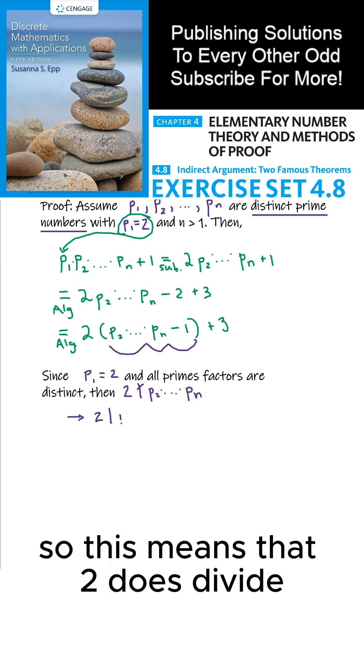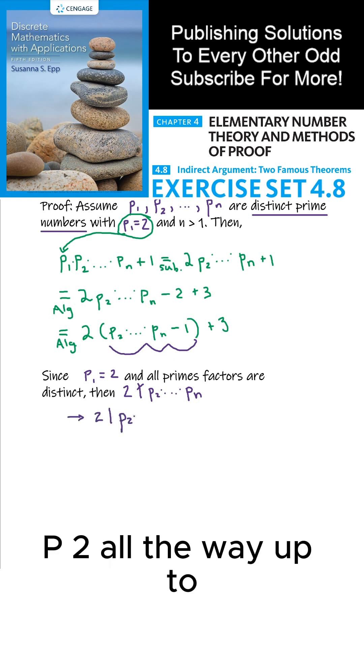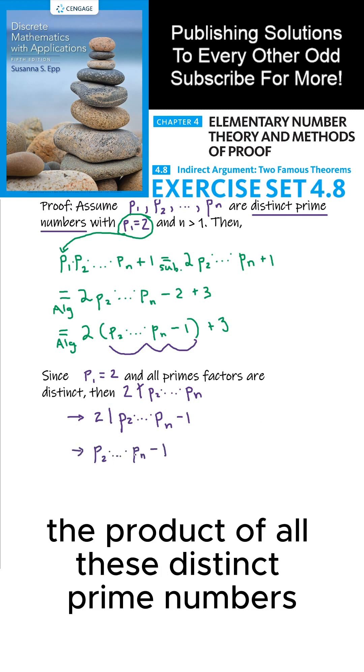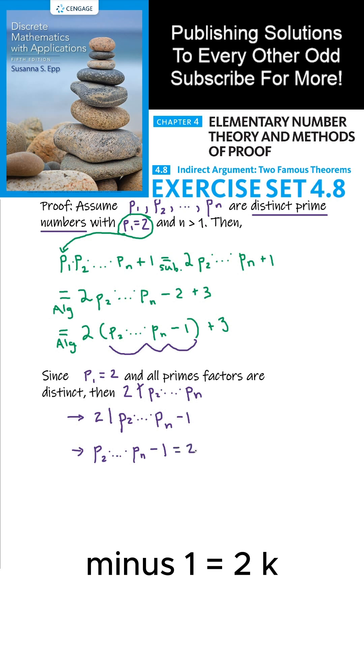So this means that 2 does divide p₂ all the way up to pₙ minus 1, since subtracting 1 from any odd number is even. That means that the product of all these distinct prime numbers minus 1 equals 2k for some integer k.